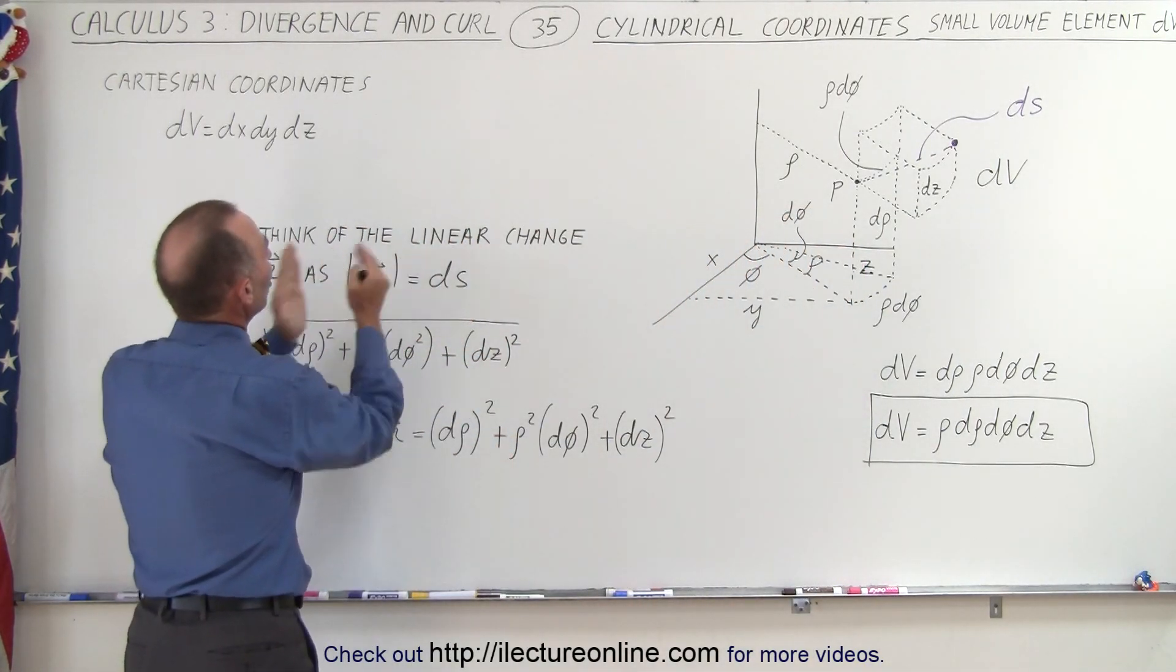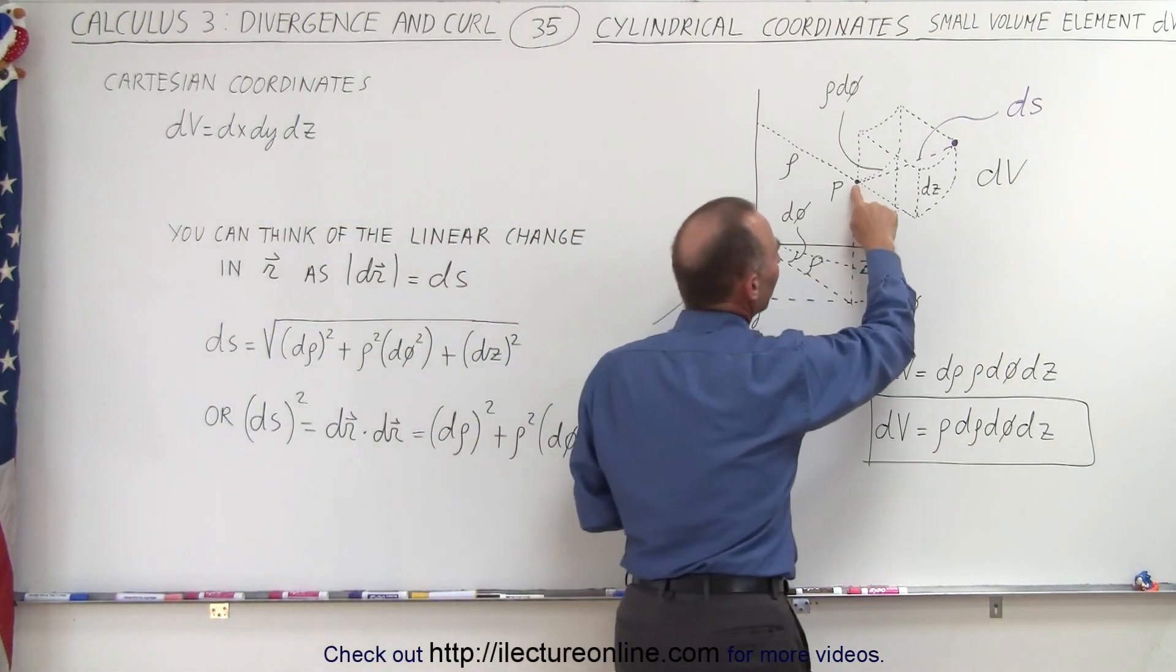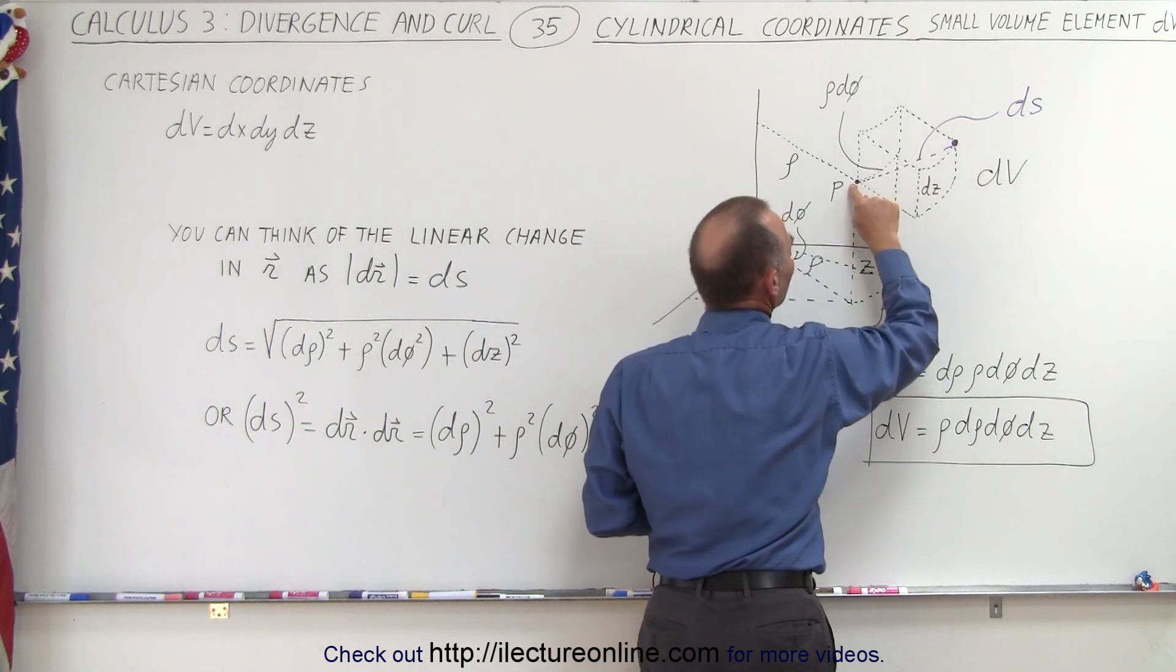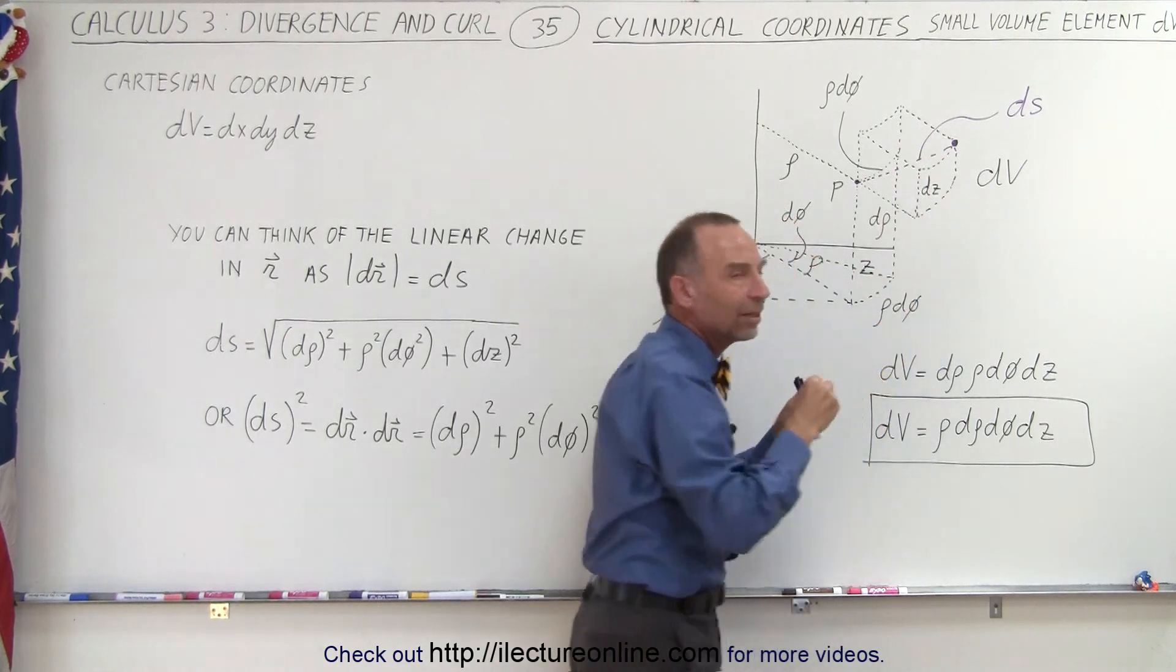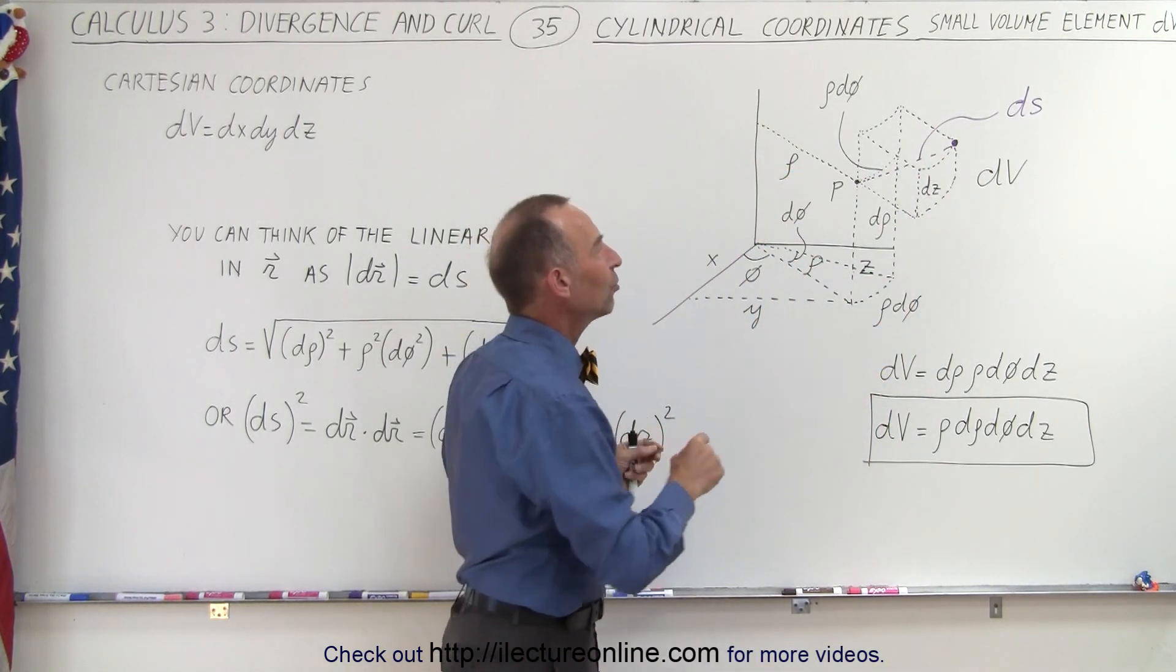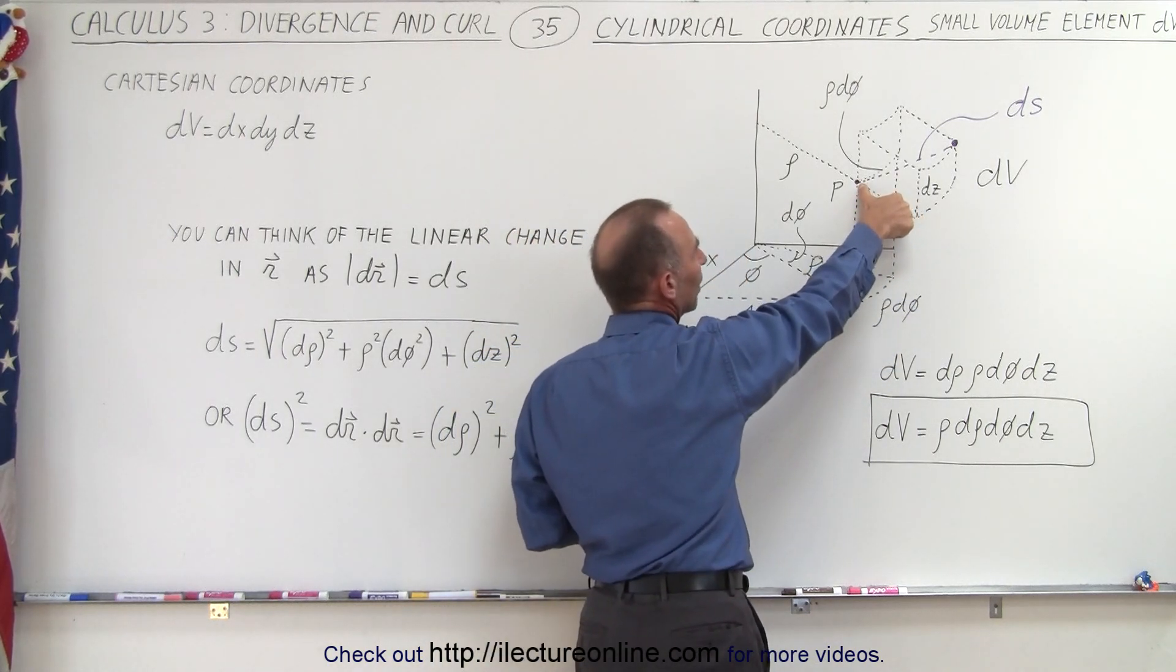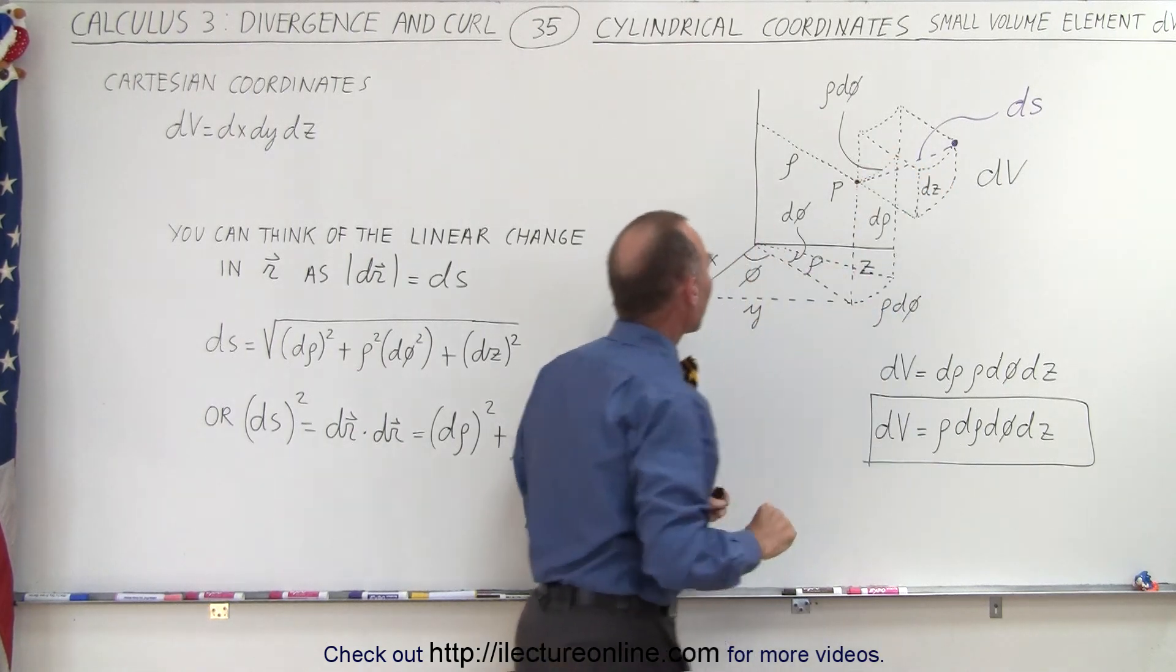Basically, when we think about it, it's the change in dr. And if you want to look at it, it's basically on the other side, across from this point right here of this volume element. So this is basically the diagonal line to the opposite point. Which means, to find that distance, we can basically take this distance squared, add this distance squared, and add this distance squared, and take the square root of that.